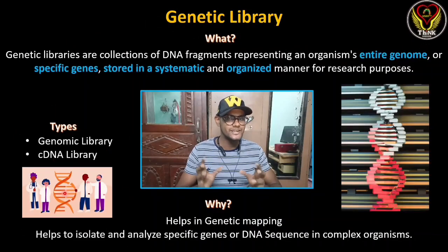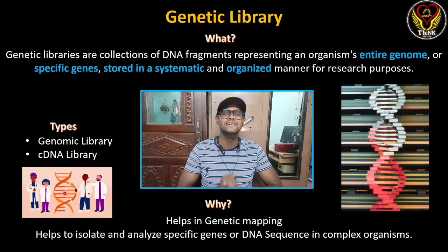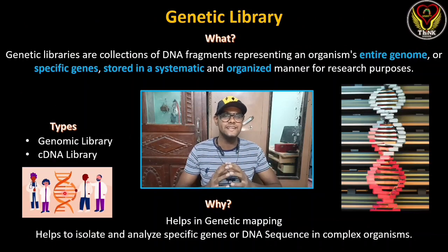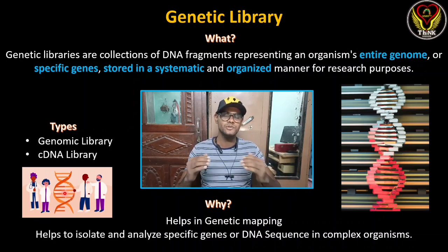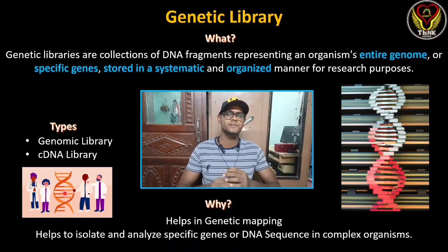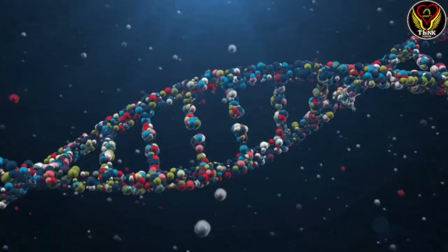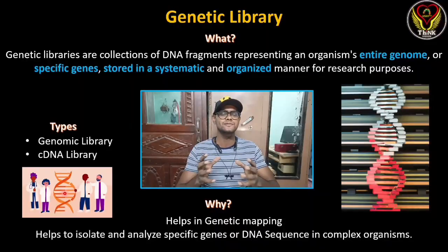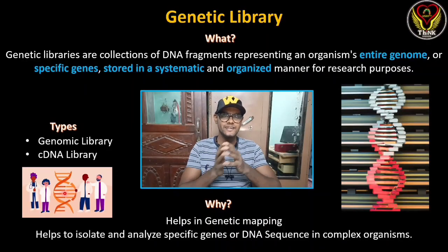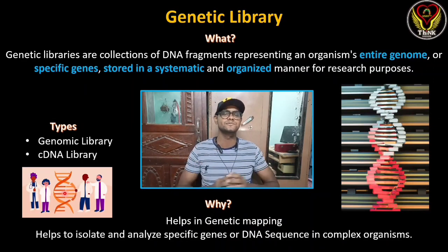This is the basic concept. Where is the genetic library helpful? It helps in genetic mapping. We are talking about the human genome — where is the first gene? Where is the insulin gene? Genetic mapping helps to isolate and analyze specific genes or DNA sequences in a complex organism.